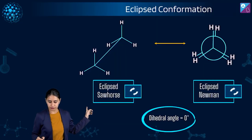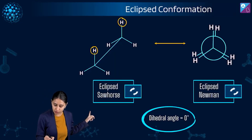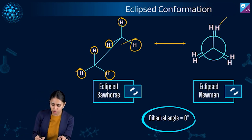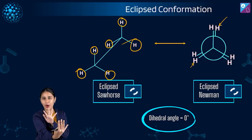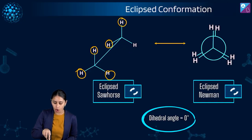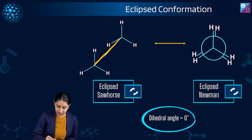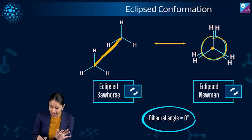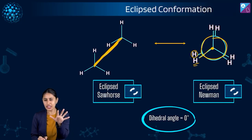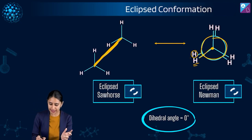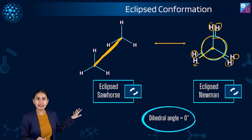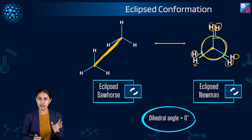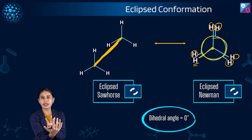Check this out — eclipsed sawhorse: just behind this hydrogen we have this hydrogen, just behind this hydrogen we have this hydrogen, just behind this hydrogen we have this hydrogen. Ideally, when we see it head on, we should not be able to see the back three hydrogens because they are just behind the front ones. But we write it like this in the Newman projection. In the sawhorse projection, we can easily see it because we are viewing along the molecular axis, but in Newman projection we are seeing it head on. So the dihedral angle for the eclipsed conformation is equal to zero degrees — the substituents are just behind one another.